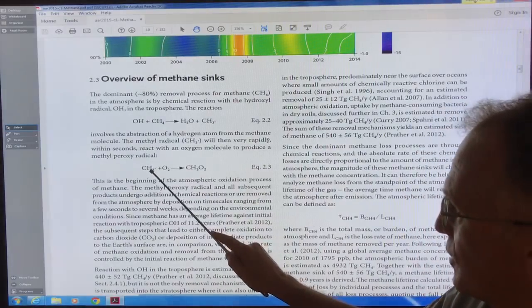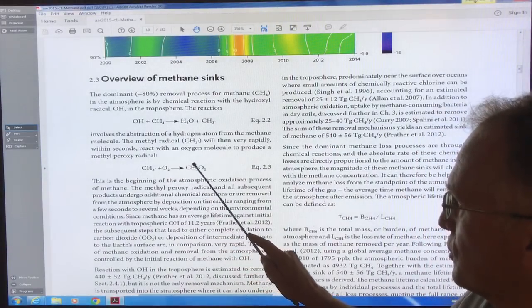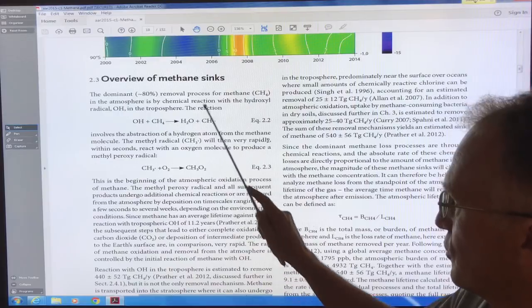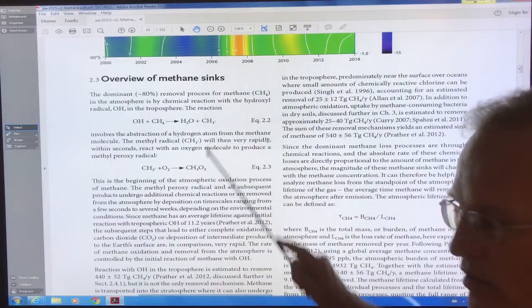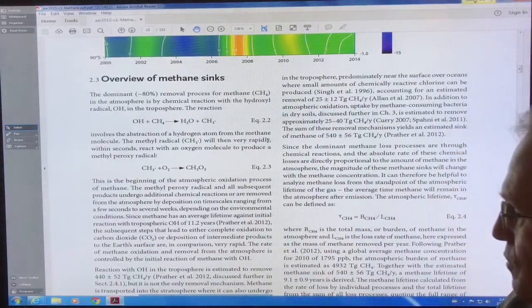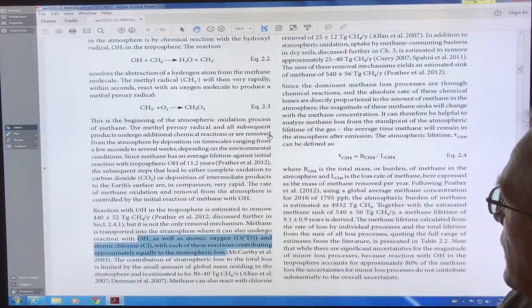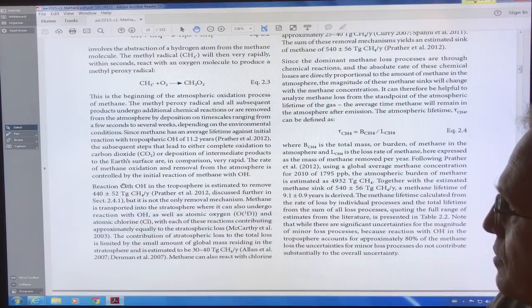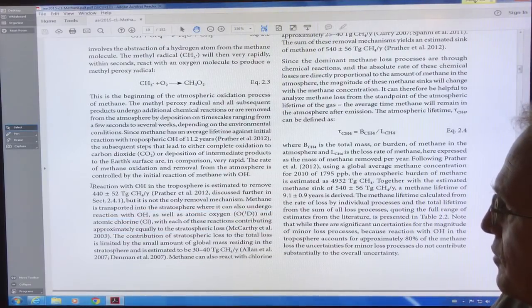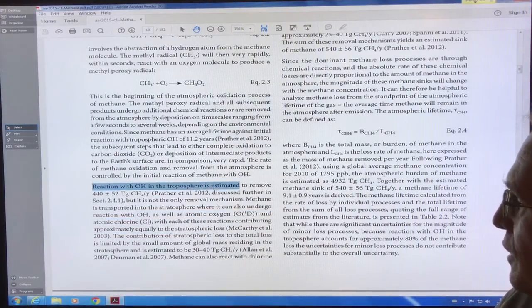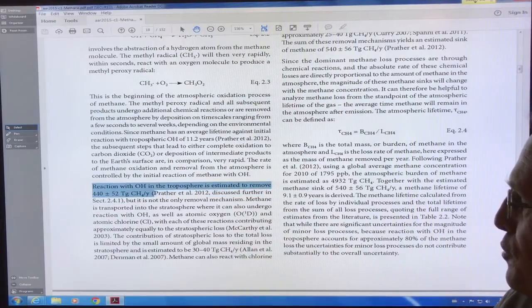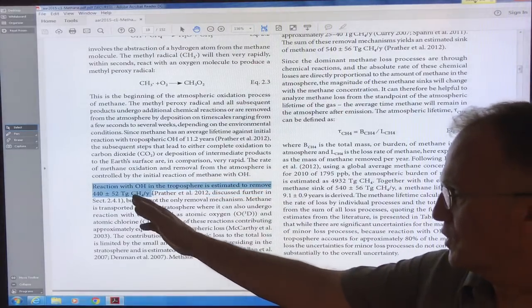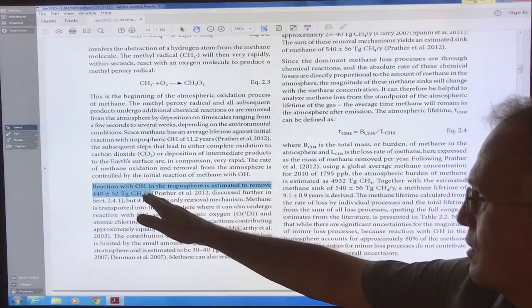The methyl radical reacts with oxygen to produce this methyl peroxyl. So it's the oxidation process as well, which is involved here with methane. Reaction with OH minus in the troposphere is estimated to remove 440 plus or minus 52 teragrams of methane per year.